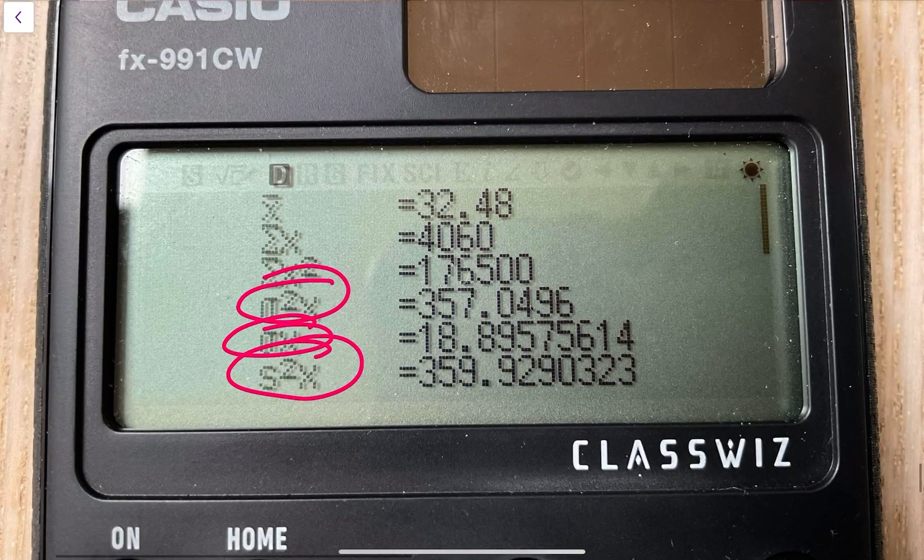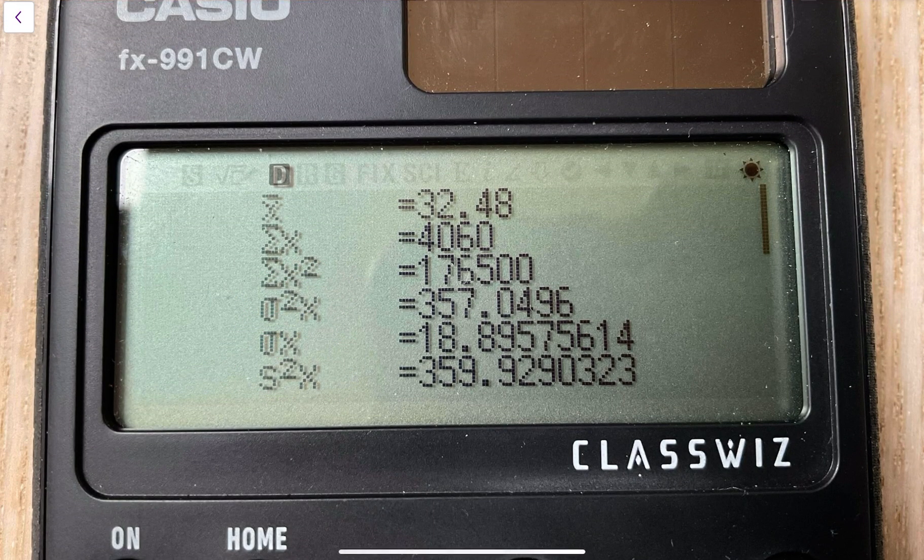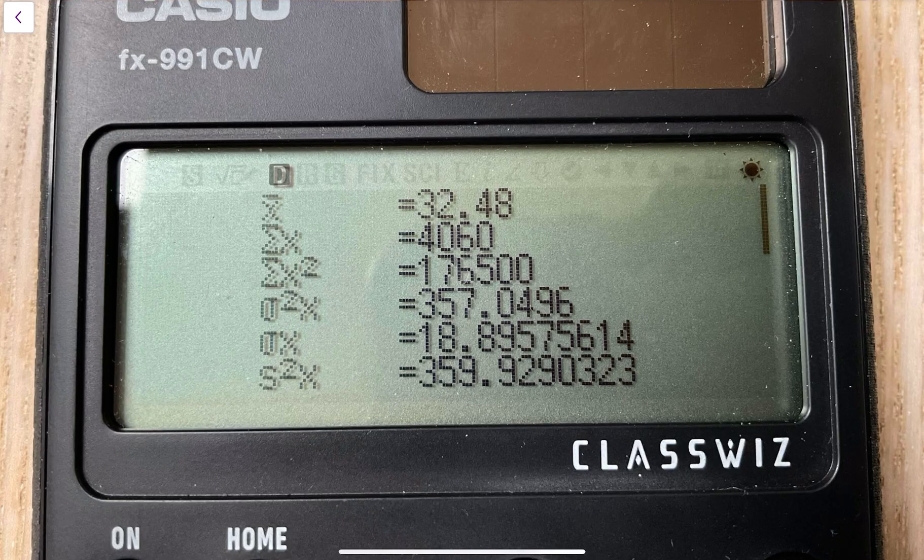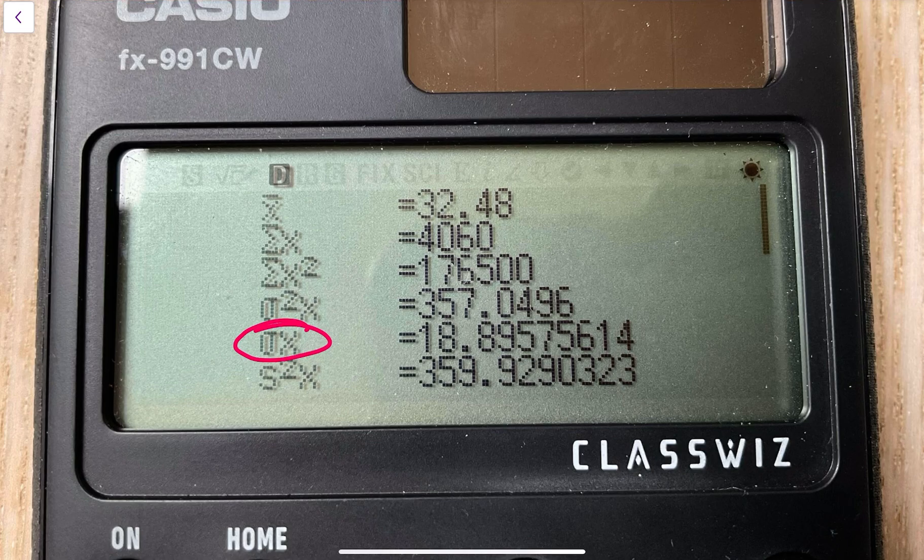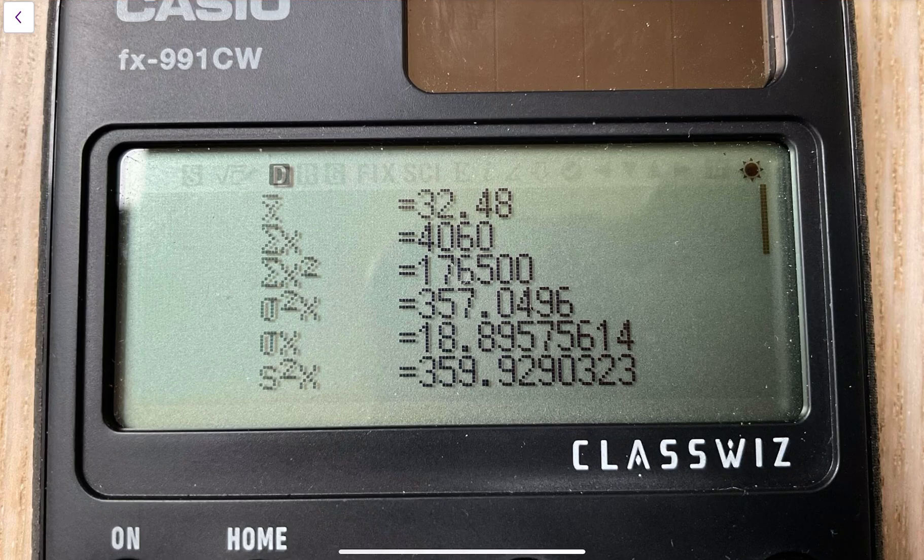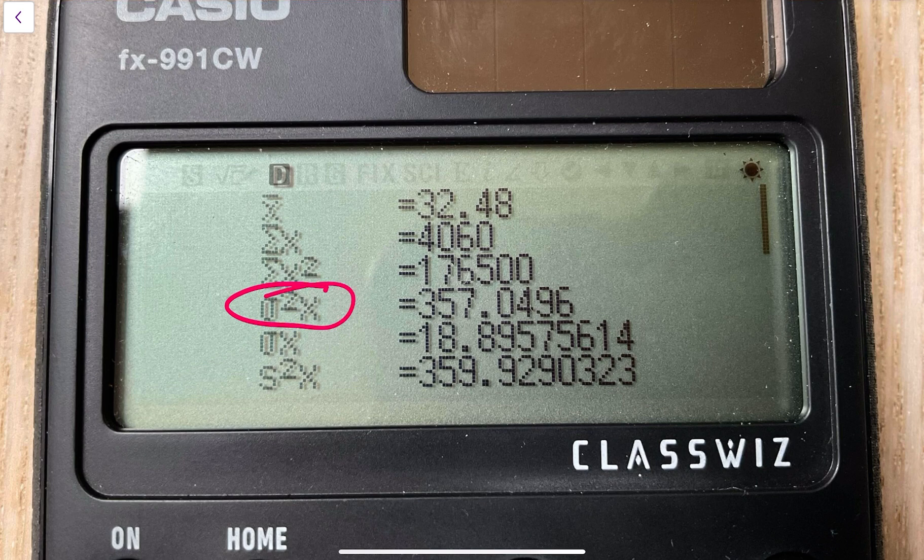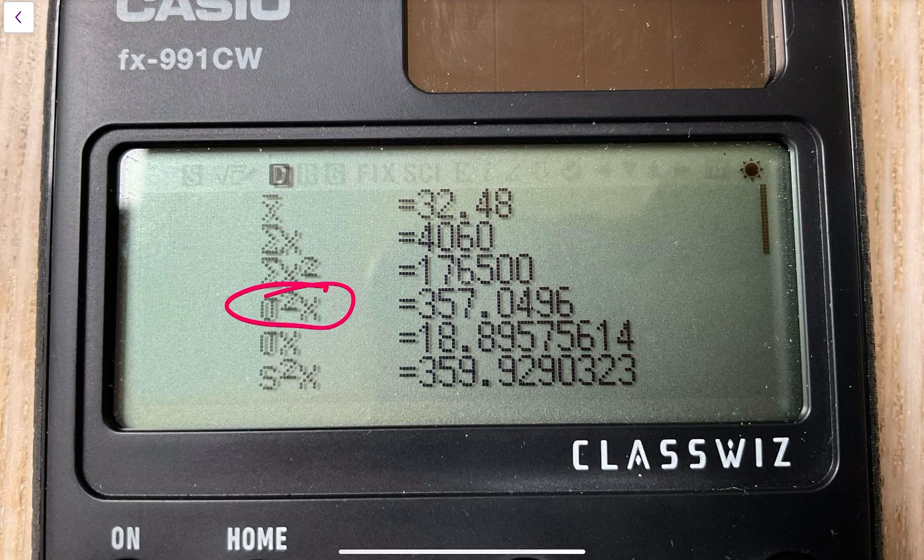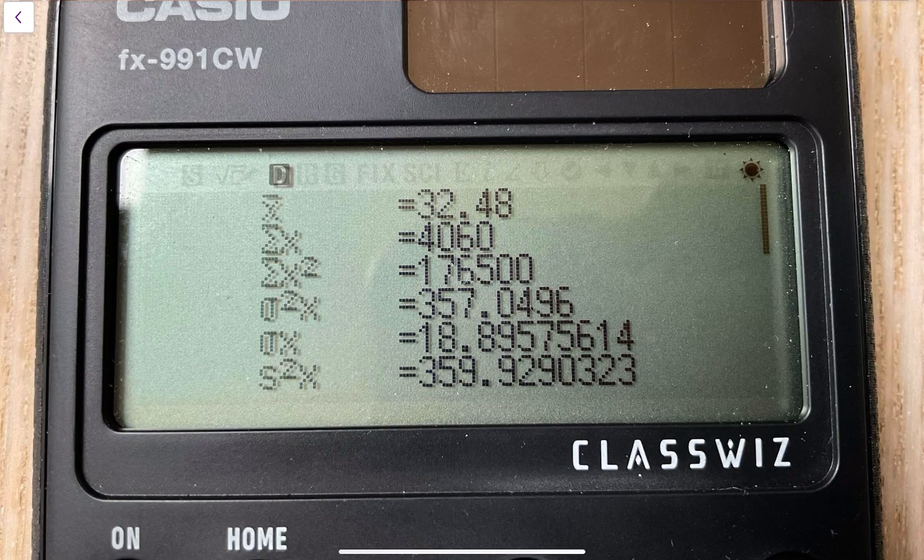Let's talk about what these things are then. This one here is σx. Now you use this one if you have got a population and you want to find that standard deviation. This one is if you've got a full population again but you want to find its variance. And remember what variance is: variance is standard deviation squared.